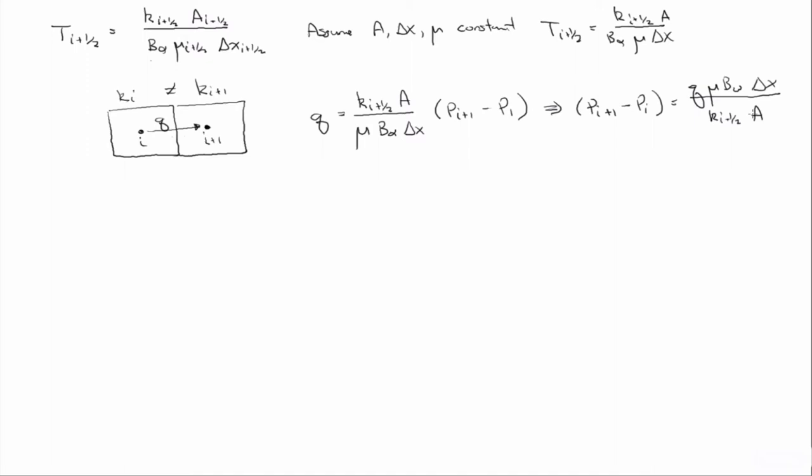Now what we're going to do—and this is where we're introducing some approximation to the theory—because strictly speaking, this entire grid block has one pressure, and the pressure is discontinuous at the grid block boundary.